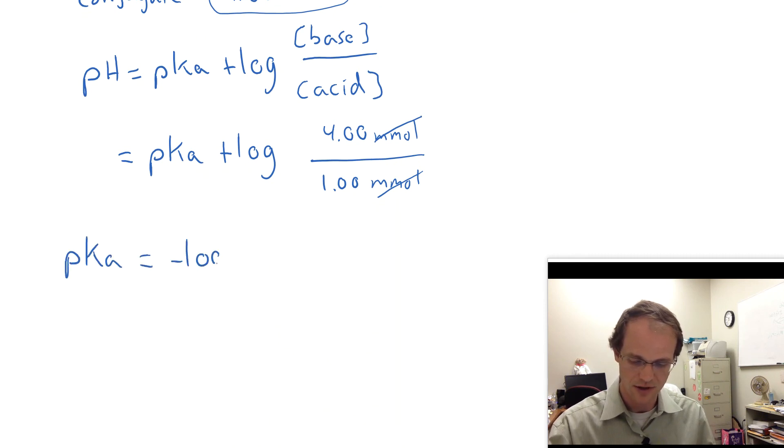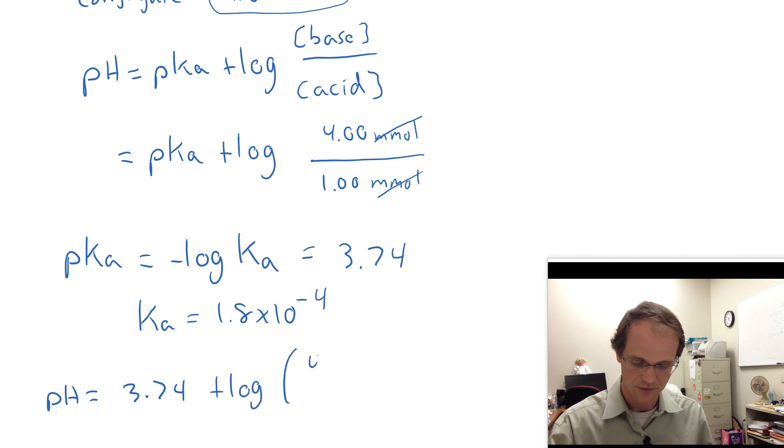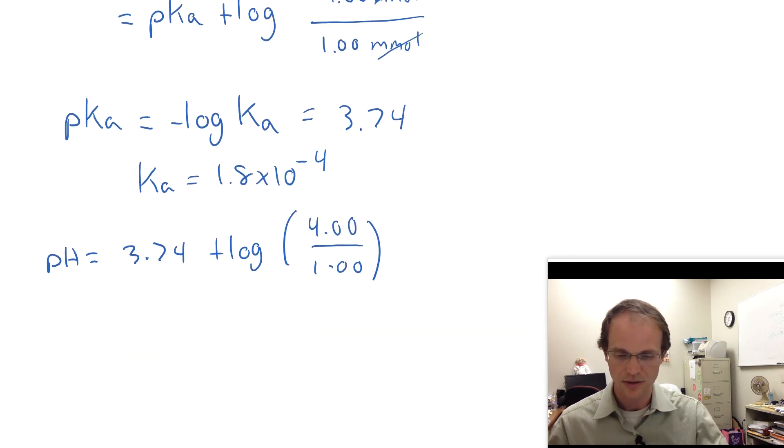Now I've got to figure out what the pKa is. And remember pKa, we're just going to take the negative log of the Ka. And so if you plug that in, you get 3.74, because the Ka of the formic acid is 1.8 times 10 to the minus fourth, you just look that up in a table. So we are finally ready to calculate the pH is 3.74 plus the log of 4.00 over 1.00. You plug that in your calculator, and you find that the pH has gone up to 4.34.